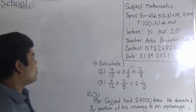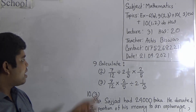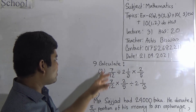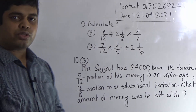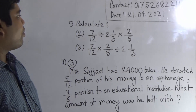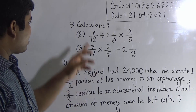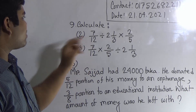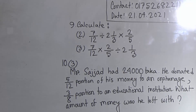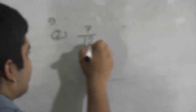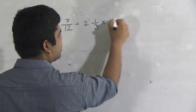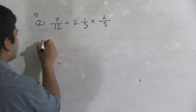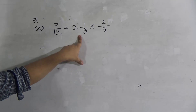Now we shall solve our today's topics. Here question number 9: calculate. That means two fractions are given with division and multiplication both in fractions. We solve this math. Here question number 2 and 3. So at first we solve question number 2. Question 9, number 2: here the question is 7/12 divided by 2 and 1/3, multiplied by 2/5. Dear student, please notice here this is a mixed fraction.